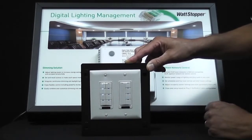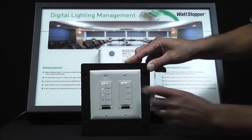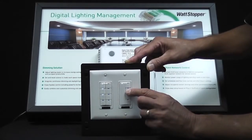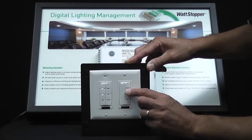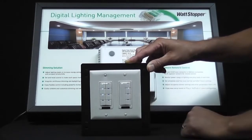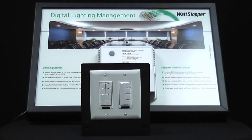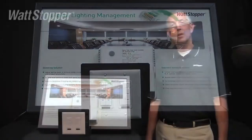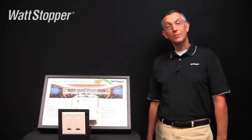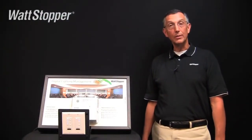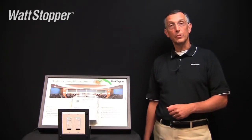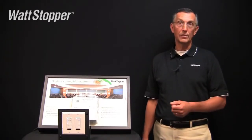So now we have our loads dimmed to where we want them. We can go ahead and press and hold the scene button for 5 seconds and save the scene. So there you have it — I've just saved the scene without having to have dimmers in the room using Active Dim.